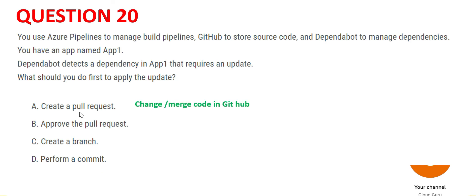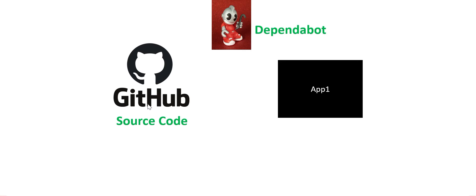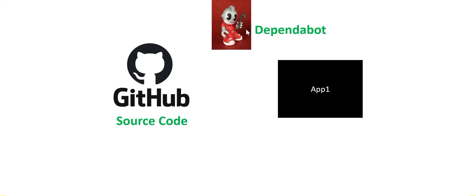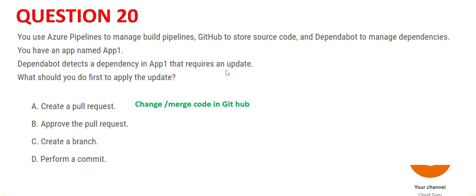The first option is to create a pull request — you do that when you want to change or merge code in GitHub. If you already have a new version of App 1, you can merge it by creating a pull request. But when Dependabot detects that an update is required, a pull request is already created. You just have to approve the pull request — that is the answer.